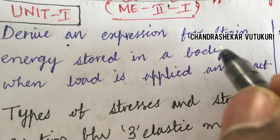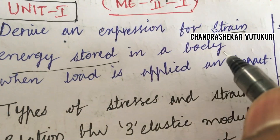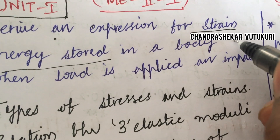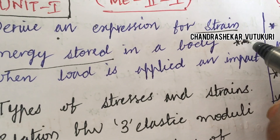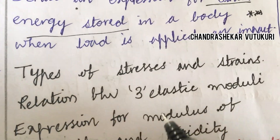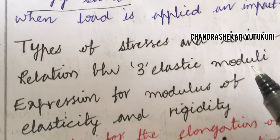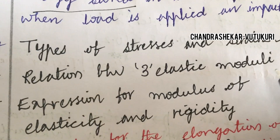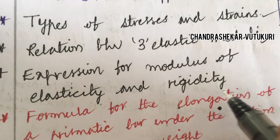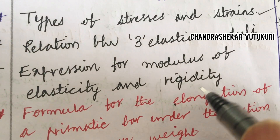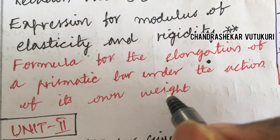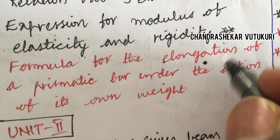Derive an expression for strain energy stored in a body when load is applied with impact — this is a top question. Types of stresses and strains as short or long questions, and the relation between the three elastic moduli are important for 5 marks. Expression for modulus of elasticity and rigidity, and the formula for elongation of a prismatic bar under the action of its own weight are also key topics.